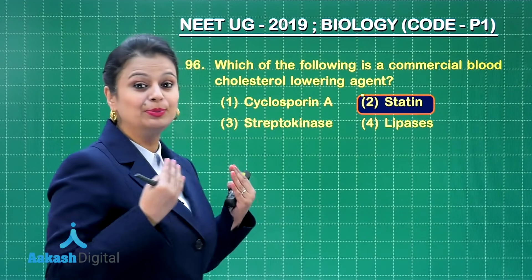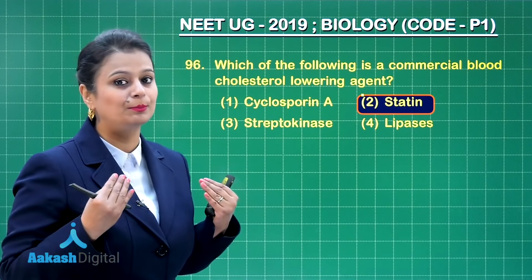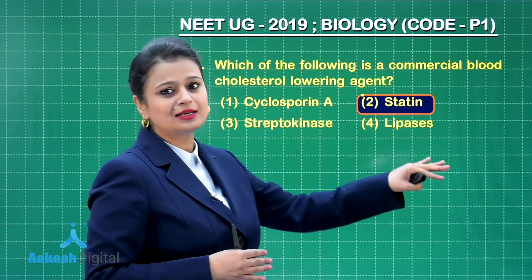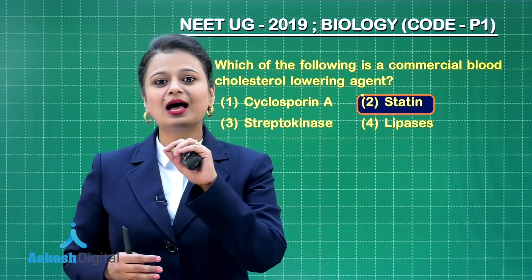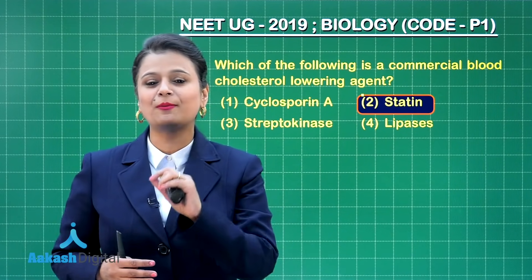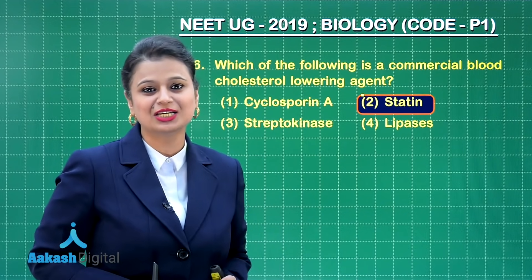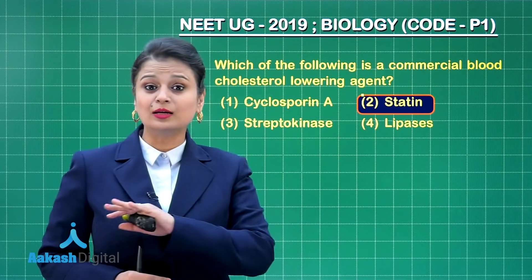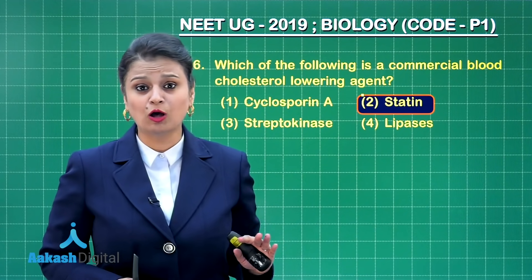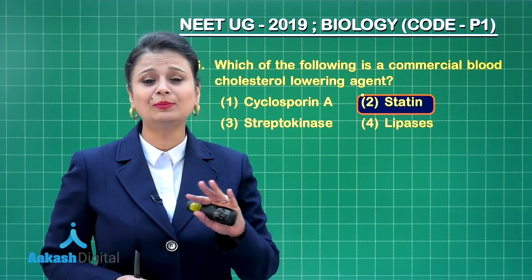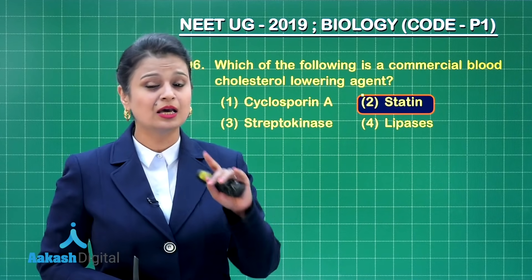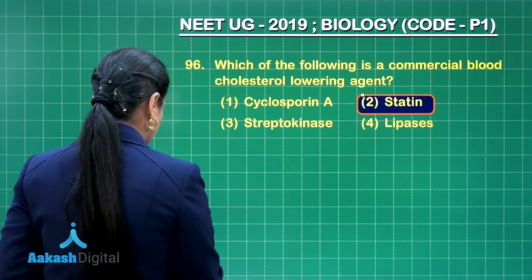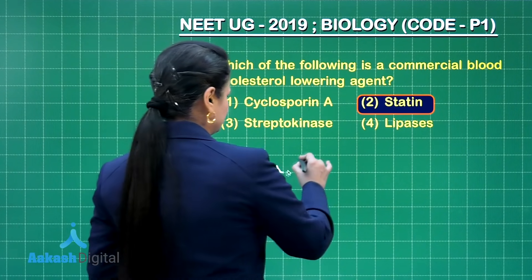Streptokinase is a blood clot buster. Lipases are enzymes used for making detergents — they are involved in dissolving oil-based stains. So our right answer here is option number two, statins.